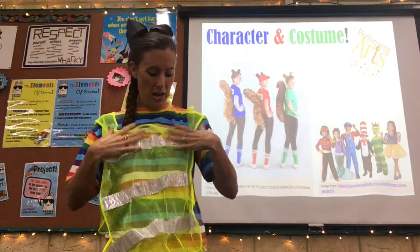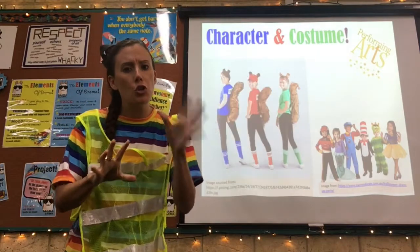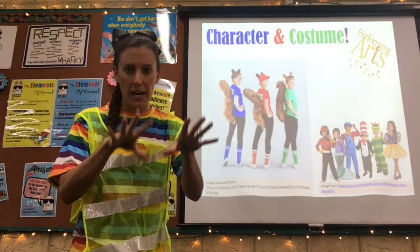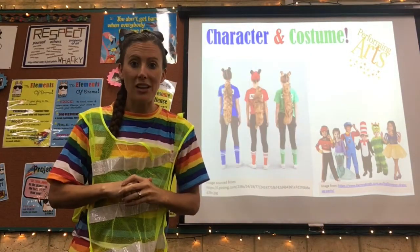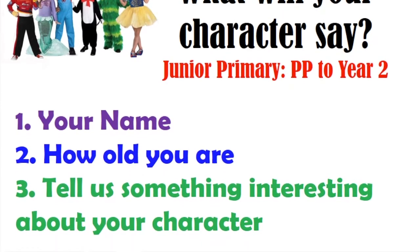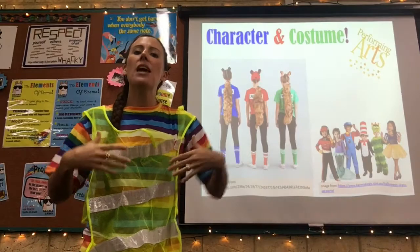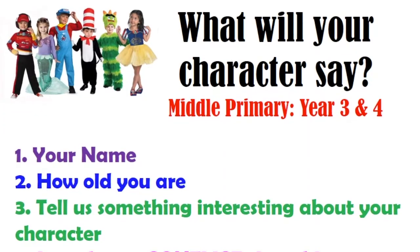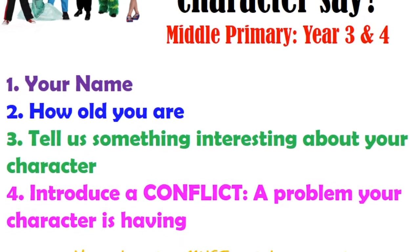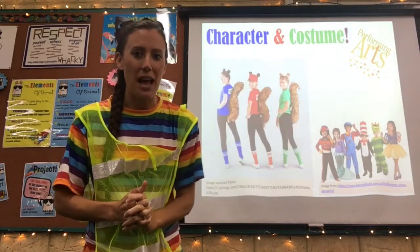I'll give you an example of what junior and middle primary students might do. They need to say their name, their age, and something interesting about their character. For middle primary — like year three and four students — they also need to present a conflict or a problem that their character is having.